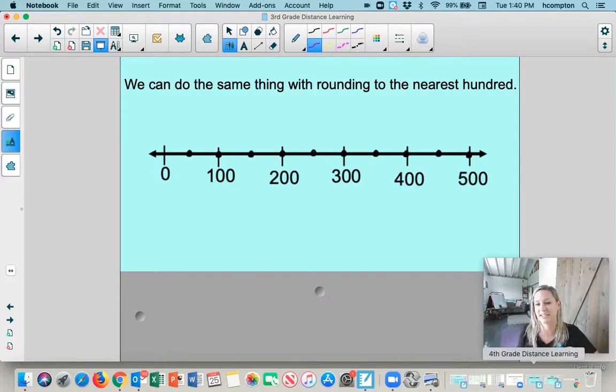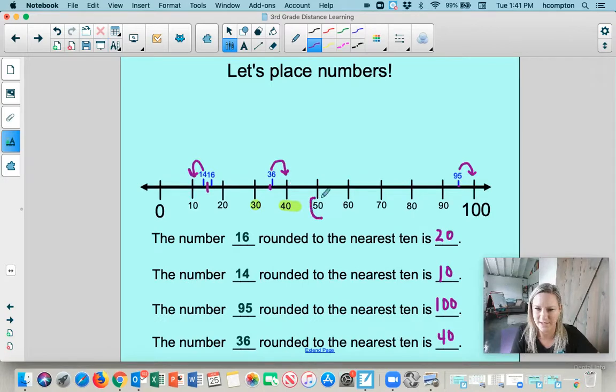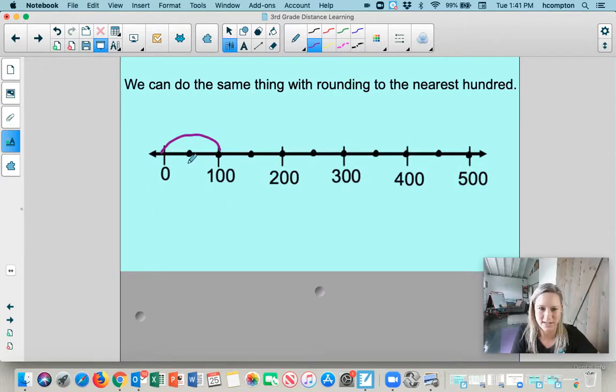We can also do the same thing with rounding to the nearest 100, which is kind of fun because if you look at this number line, you can see I've changed it, right? But you can still notice things about this. So let's check this out. So we have zero. But now we have 100. 100 is not over here this time. We counted by 100 here. So I have 100, 200, 300, 400, and 500. So I can still think about numbers and round them to the nearest 100. But now I have to think about what is right between 0 and 100. Do you know what that is? Well, on the last page, we saw right between 0 and 100, it was 50, right? So let's check this out. Let's see if we can put a 50 here. Does that make sense? 0, 50, 100, 150.